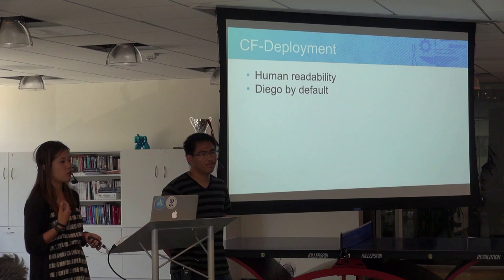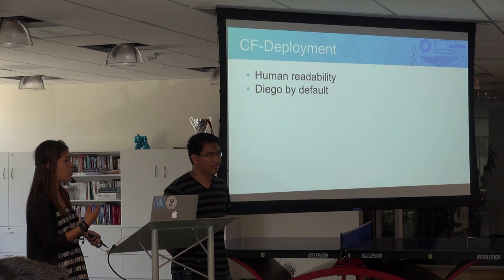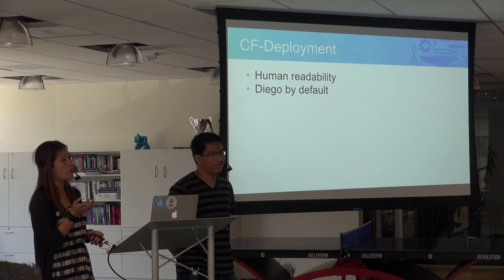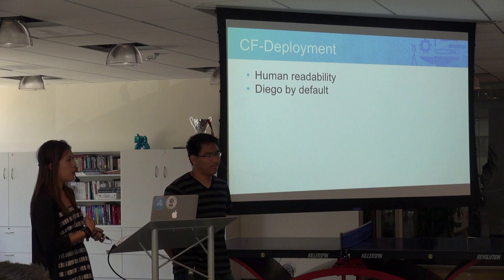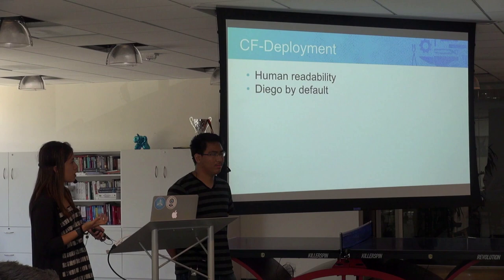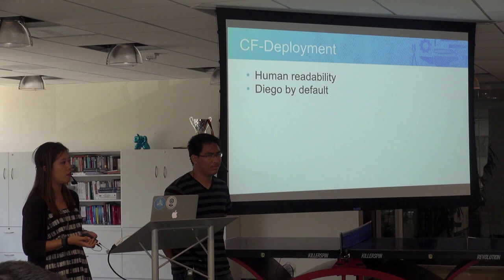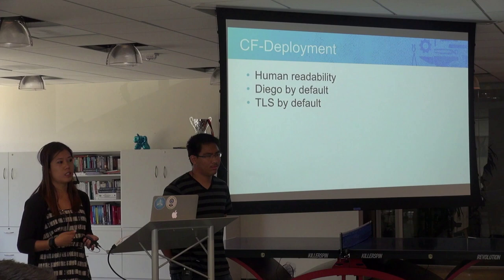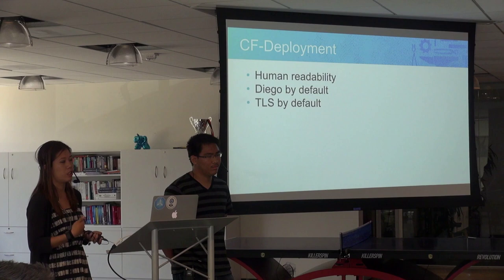Another major benefit: CF Deployment uses Diego as your container runtime system by default. For those who have deployed CF the old way with CF Release, it used to take two deployments — one for Cloud Foundry and one to deploy Diego on top of it. With CF Deployment, you only deploy once to have a Cloud Foundry with Diego. And for all components that use mutual TLS, it turns mutual TLS on by default, making the base case for a Cloud Foundry installation more secure.